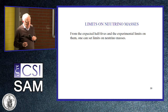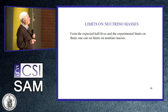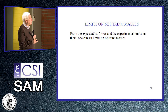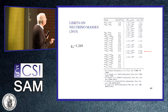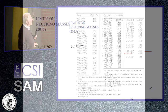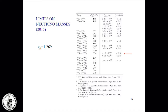Now we have the expected half-lives, so we can put limits on neutrino masses. From the experimental limits combined with these expected half-lives, one can set limits on neutrino masses. Various experiments have tested and put limits on the half-life of zero-neutrino decay, going from calcium, germanium, selenium, zirconium, molybdenum, palladium, all the way down to neodymium-150.